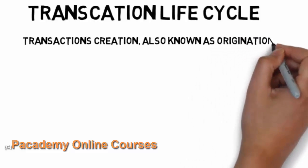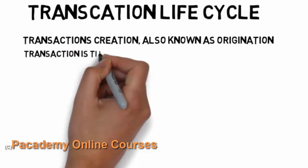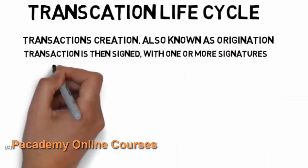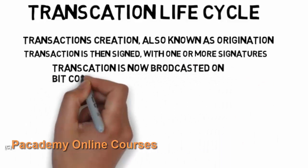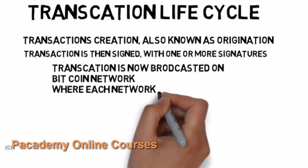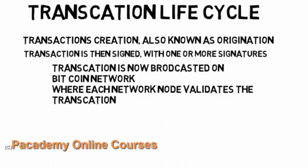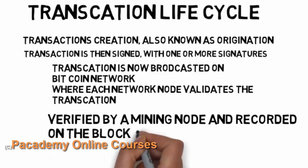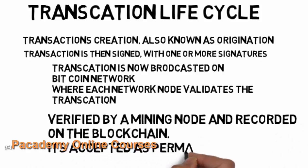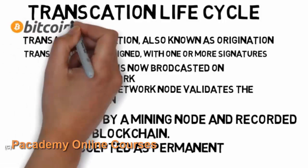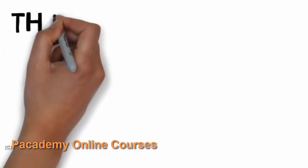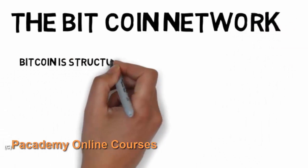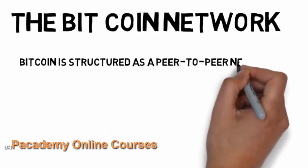Let's look into the transaction cycle — how a transaction is created and how it goes into the ledger or blockchain. Transaction creation is also known as origination. Suppose person X wants to transfer money to person B: X creates a transaction, which is then signed with one or more digital signatures. The transaction is broadcasted on the network where each node validates it. It is then verified by a mining node, which solves a complex mathematical problem, and once solved the transaction is validated and recorded on the blockchain.